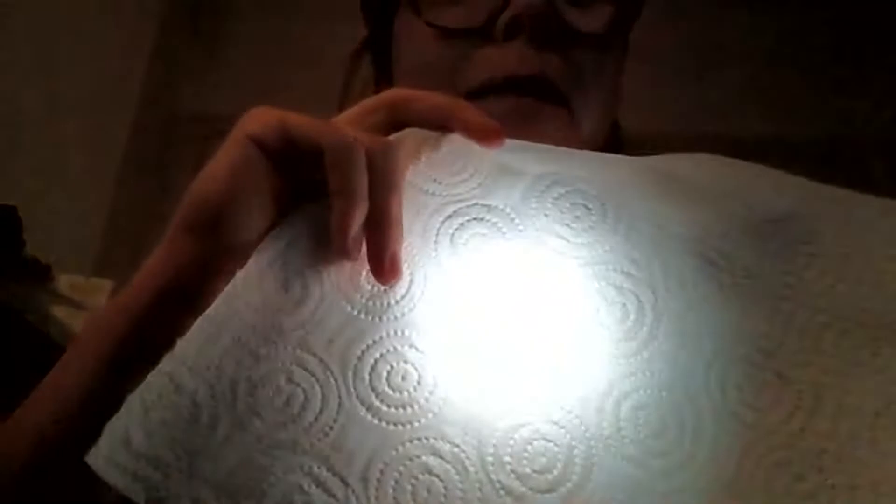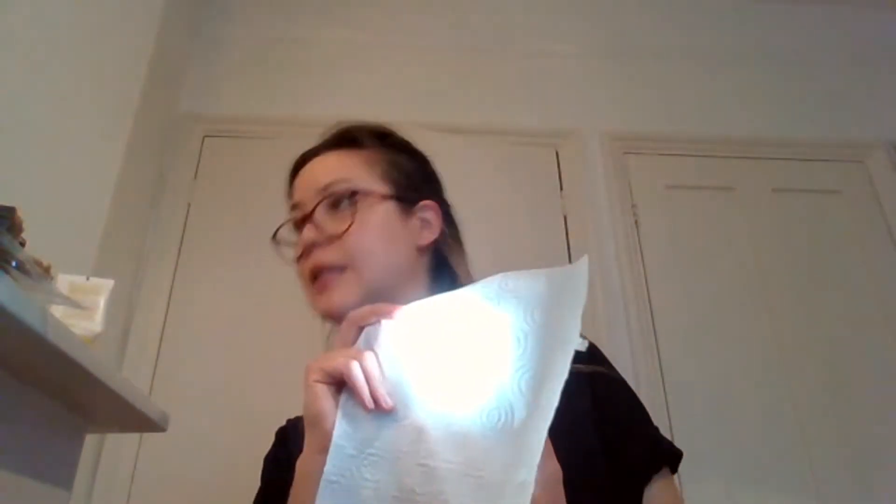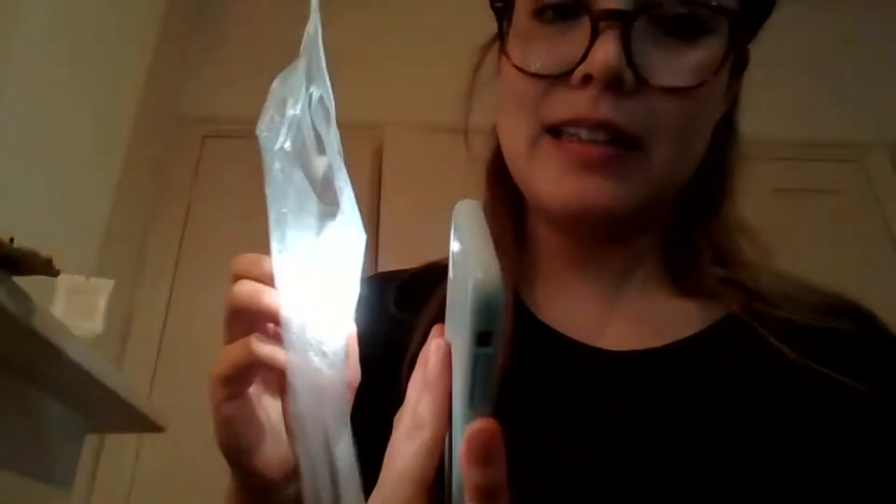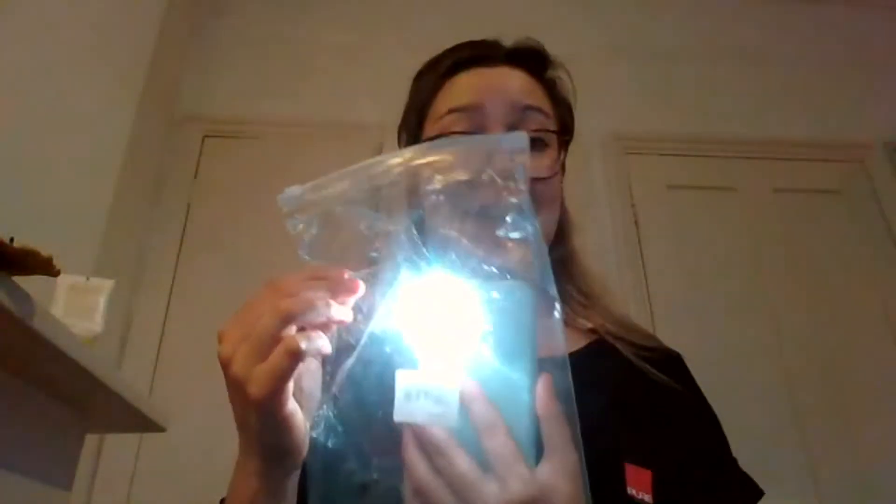OK, so that is our first one done. The paper towel, light can pass through it and it is therefore not opaque. OK, my second material is going to be the sandwich bag or plastic bag. If you don't have that, you can use cling film. And can light pass through it? Yes, it certainly can. Light passing through it. OK, so the answer is yes. Yes. And is it opaque? No, it's not opaque. So then I would put no in my no column for that.